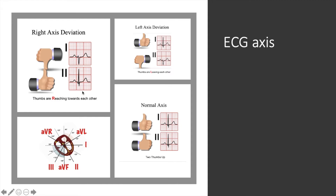For right axis deviation it's the opposite — lead 1 is negative and lead 2 is positive, and the two leads are reaching for each other. Going back to our analogy, if the right side of the heart is thicker than normal, the current gets drawn towards that side, potentiating lead 2, while the current being taken away from lead 1 causes it to appear negative. It's important to recognize what left axis deviation looks like — the leads are leaving each other — and in right axis deviation they are reaching for each other.